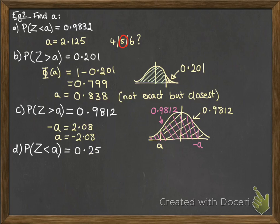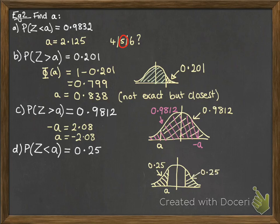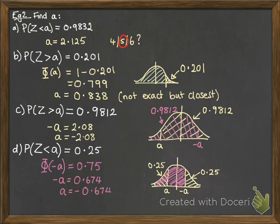Next: the probability of z less than a is 0.25. That's less than a half, so it's on the left-hand side. By symmetry, that matches the region greater than minus a on the other side. So φ(−a) would then be equal to 0.75 — those two probabilities add up to 1, doing 1 minus 0.25. Looking that up on the table, we get minus a equals 0.674, therefore a must be minus 0.674.